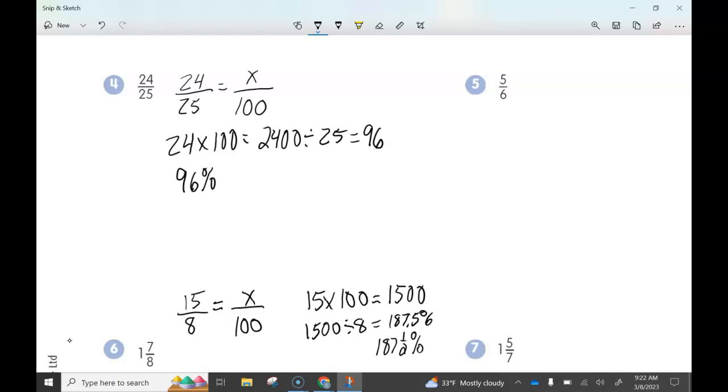With a mixed number, you've got to change it into an improper fraction first, and then just set it up as a proportion and work the problem out that way.